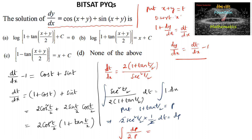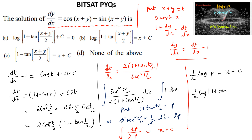So the integral becomes dP divided by 2P = x + c. That gives (1/2) log P = x + c, so (1/2) log(1 + tan(t/2)) = x + c. Substituting back t = x+y, we get (1/2) log(1 + tan((x+y)/2)) = x + c.